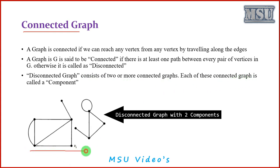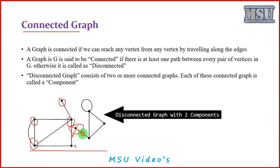Consider this graph as a disconnected graph. From V1, I cannot reach this particular vertex because no path is available. From V1, I can reach this vertex, the second, the third, and the fourth. But from V1, I cannot reach the vertices in the other component. A disconnected graph consists of two or more connected graphs; each is called a component, and from one component there is no path available to other components. This is an example of a disconnected graph with two components.